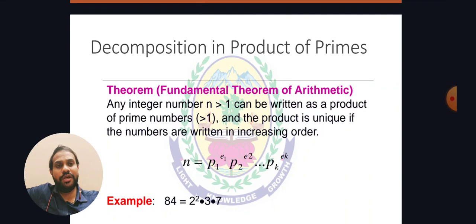The general formula is: n equals p1 to the power e1 times p2 to the power e2, up to pk to the power ek, where p represents primes (p1, p2, ..., pk are distinct primes) and e represents their exponents. For example, 84 is a composite number. 84 can be represented as 2 squared times 3 times 7, where 2, 3, and 7 are all prime numbers. Here, only 2 has an exponent: 2 squared equals 4, and 4 times 3 times 7 equals 84. All composite numbers can be uniquely determined using the fundamental theorem of arithmetic.